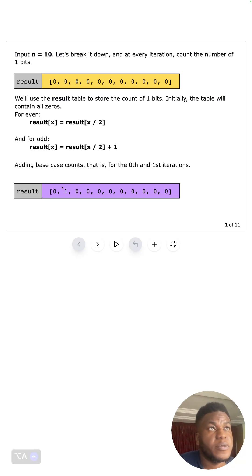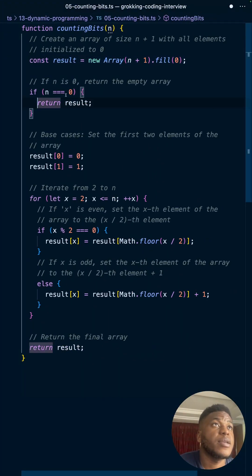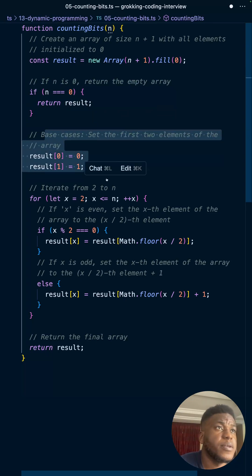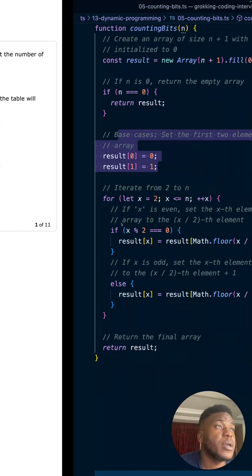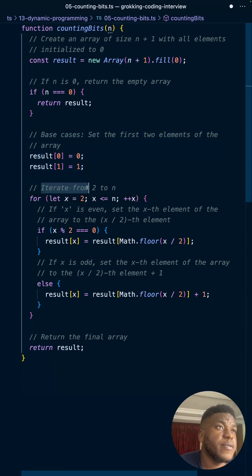We add the base case for zero - the first iteration. Basically if it's zero we could just return an empty array because that's what it is. Otherwise, set the first two elements of the array as we did down here in this image: zero and one. Then we're iterating from 2 to n.